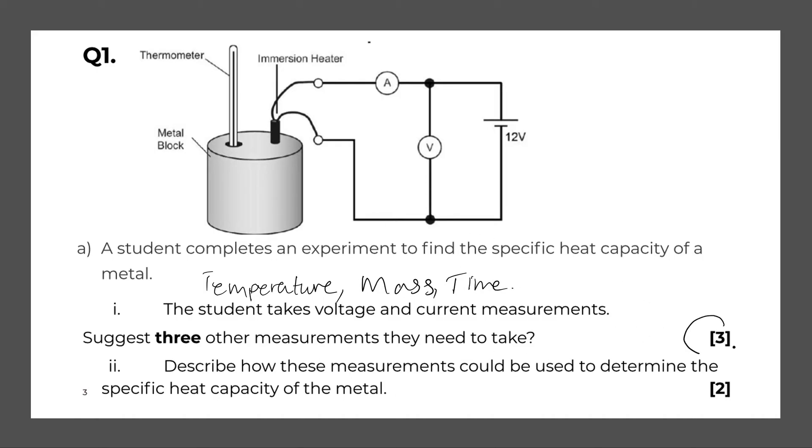Okay, so describe how these measurements could be used to determine the specific heat capacity of the material. So these three measurements are needed because we need the formula. We can just say the formula. So we would just need to do a bit of rearranging. So the specific heat capacity is the energy divided by the mass times the temperature rise.